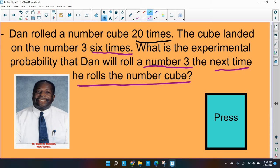What is the experimental probability that Dan will roll a number three the next time he rolls his cube? All right. So we have some numbers here we're going to deal with. The number six is what he's interested in. I'm sorry, the number three. So the probability of getting a three, he did that six times already when he rolled out of the 20.